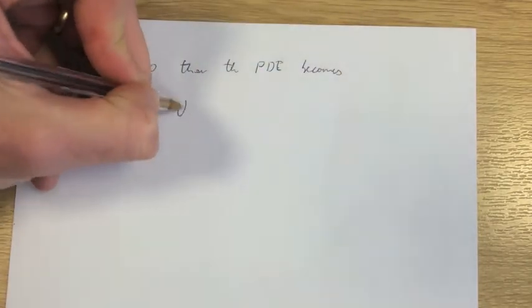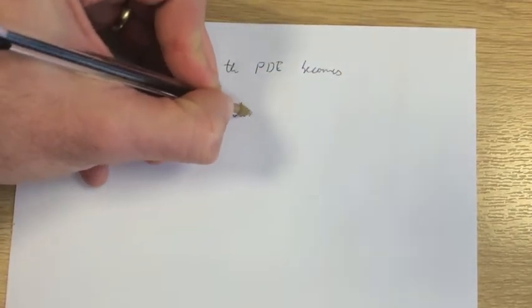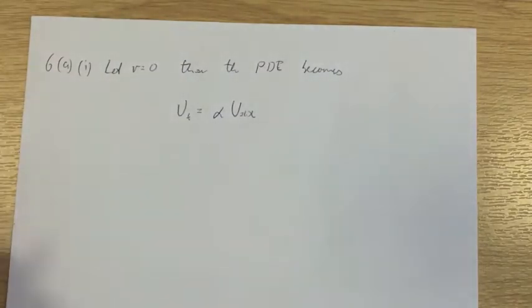To find the units for alpha, I'm going to let V equal 0. In doing so, the PDE actually reverts to simply the diffusion equation.